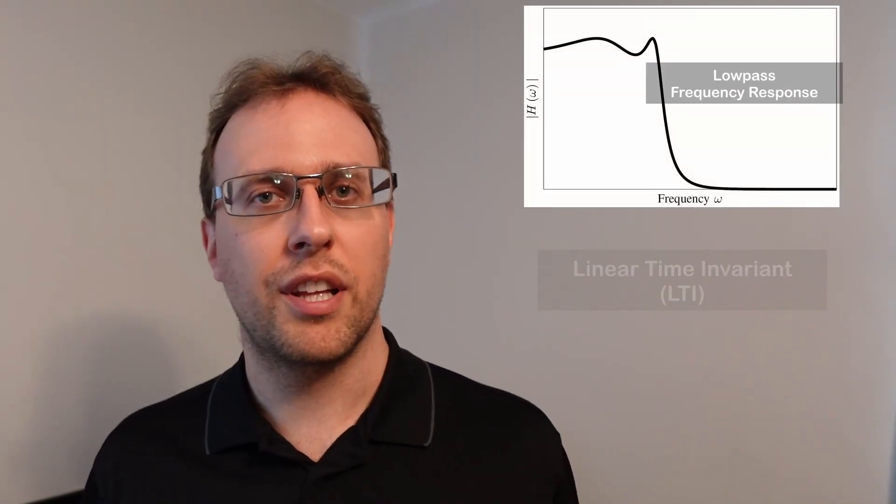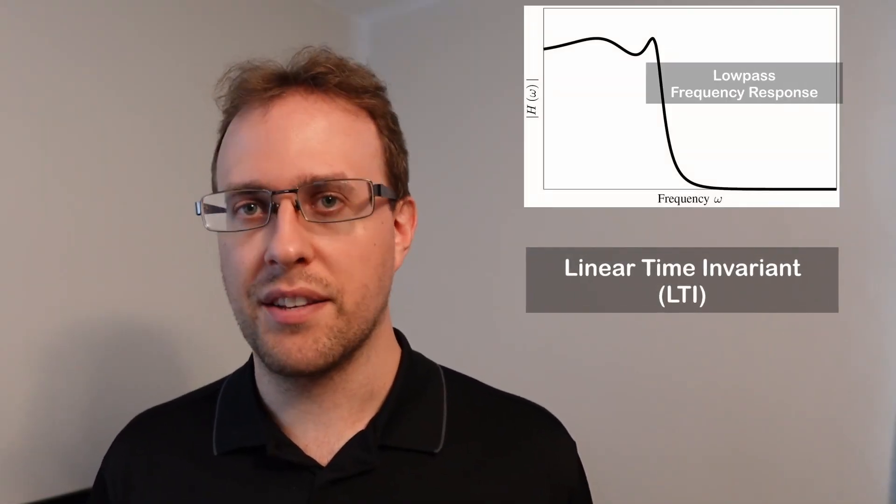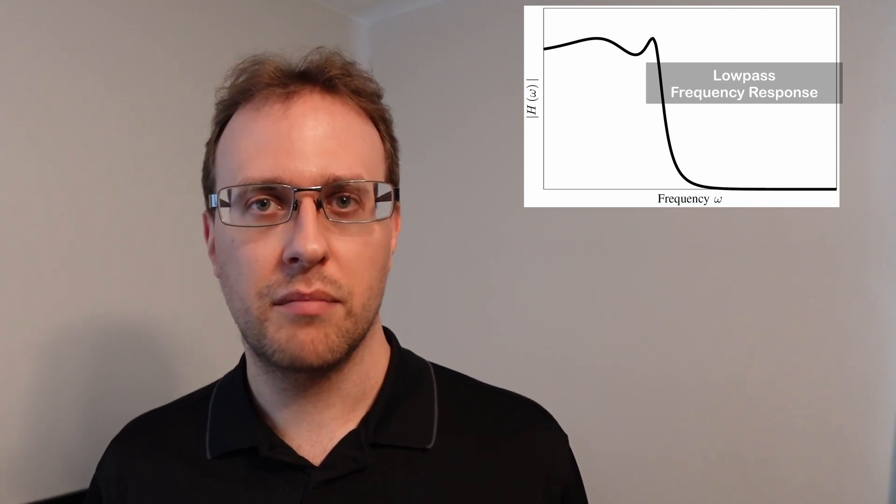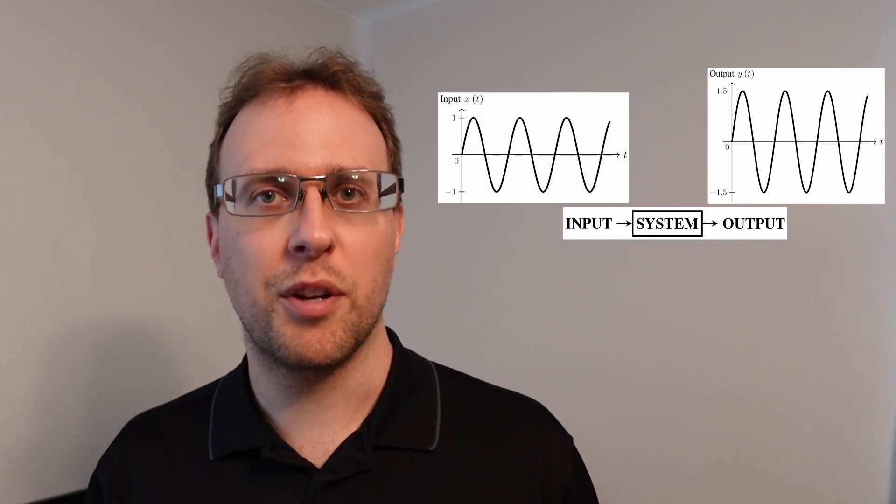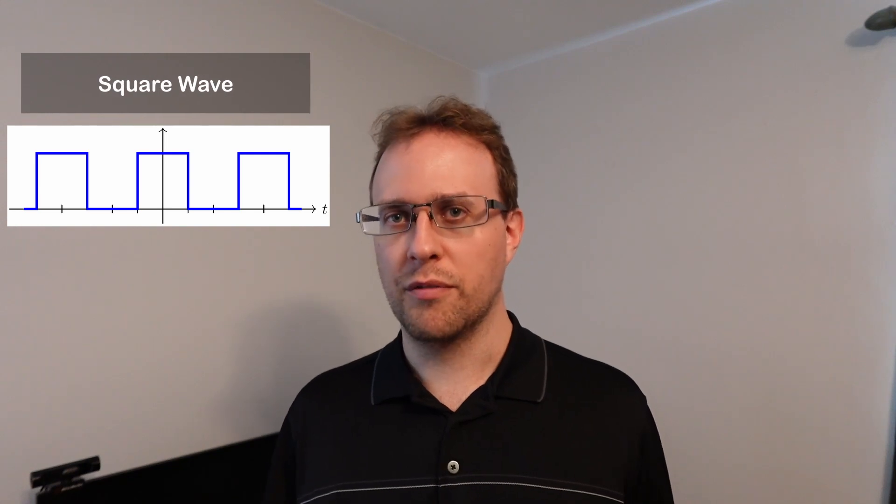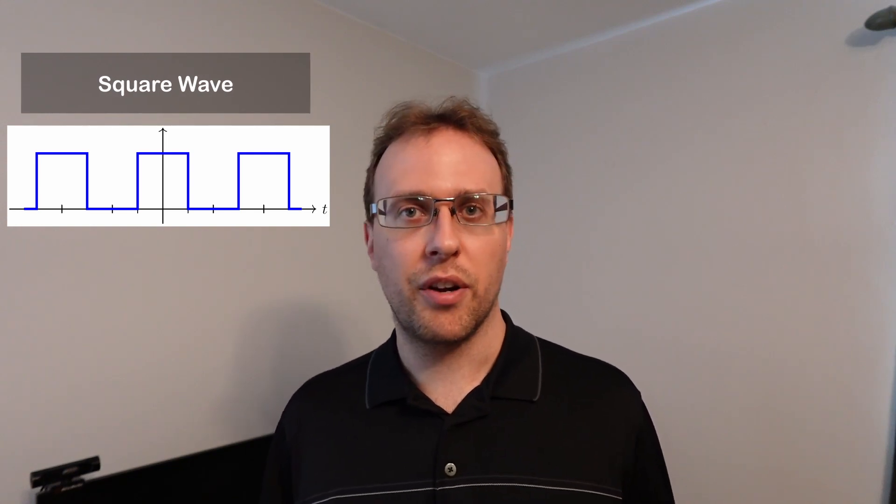If we know the frequency response of a linear time invariant or LTI system, like an analog filter, then we can figure out the system output when we know that the input is a sinusoid of some specific frequency. But what happens when the input is more complex, like if it has multiple frequency components, like in a periodic square wave?